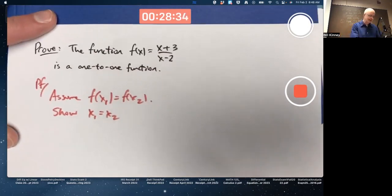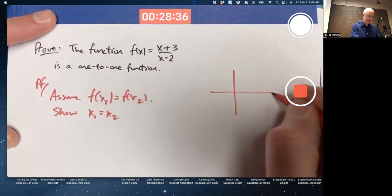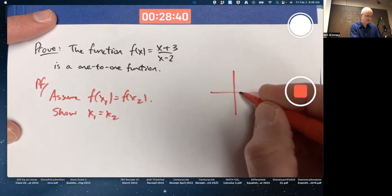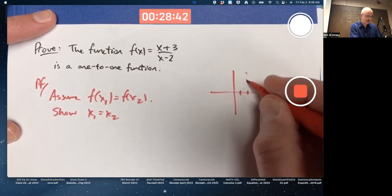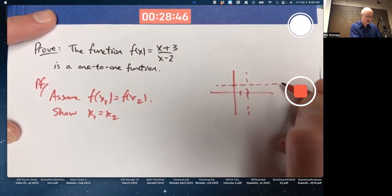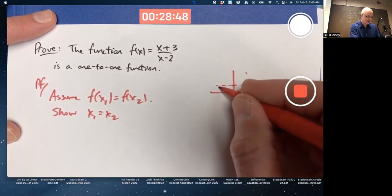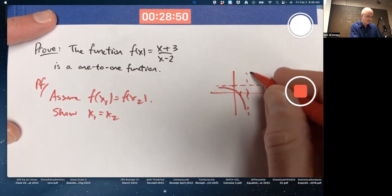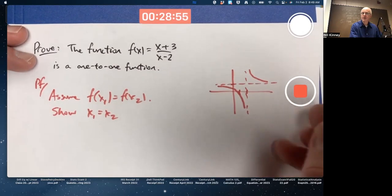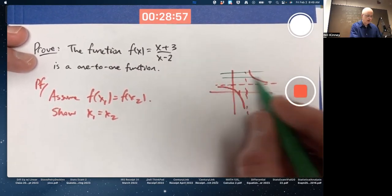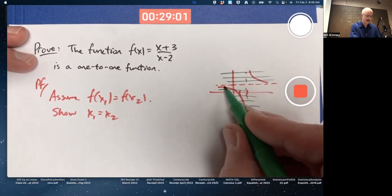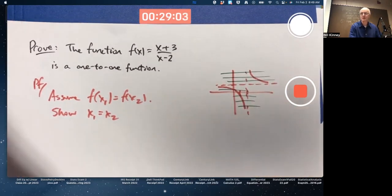So, graphically, what this means is that it passes something called the horizontal line test. If you graph this function, it turns out to look about like this, I believe. And there are no horizontal lines that go through this graph more than once. All horizontal lines go through the graph either once or no times as this horizontal asymptote goes through at no times.